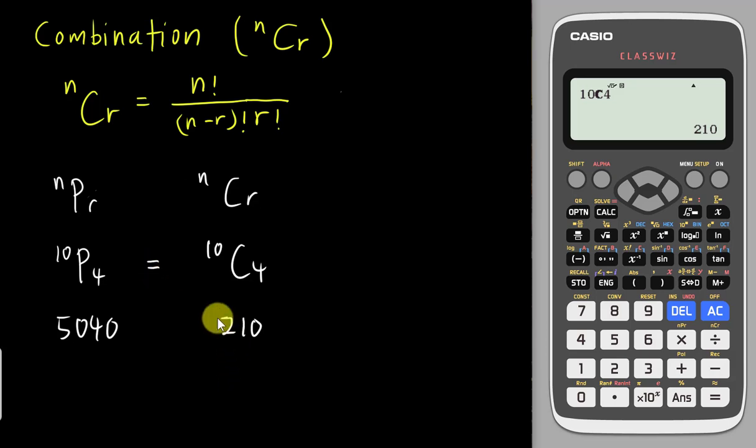What if I want to make them equal? For permutation, they actually do one more extra step, which is arrange the 4 items. From the previous video, you know if I want to arrange 4 items, I just do 4 factorial. 4 factorial means I arrange the 4 items. 4 factorial is 24. So if I do 210 multiply by 24, you'll realize I will actually get back the same result, which is 10P4. At least you need to have some idea of the difference between nPr and nCr.